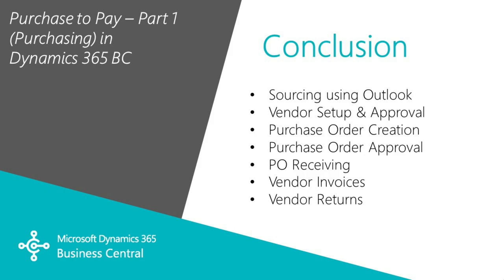Alicia did some sourcing in Outlook — she used Outlook to get offers from three new vendors for a particular item, set up the selected vendor as a contact and a new vendor, and initiated a new purchase order. Both the new vendor and new purchase order went through an approval process. Once the PO was approved, David received it into the warehouse. Jacob, the admin person, added the invoice when he got it from the vendor. He also entered one vendor return that they needed to do.